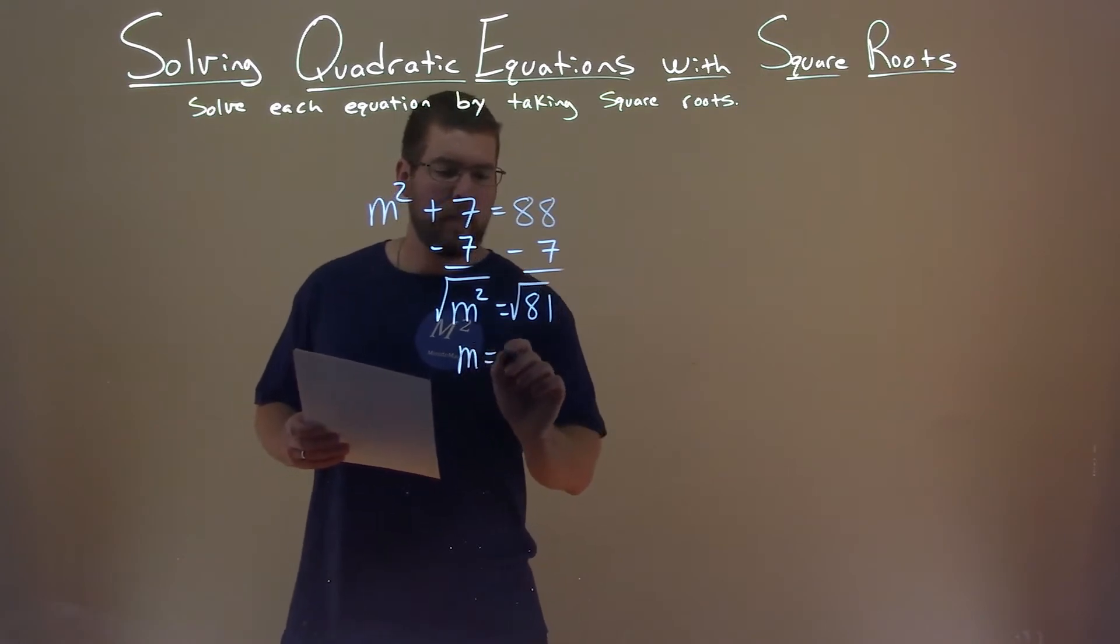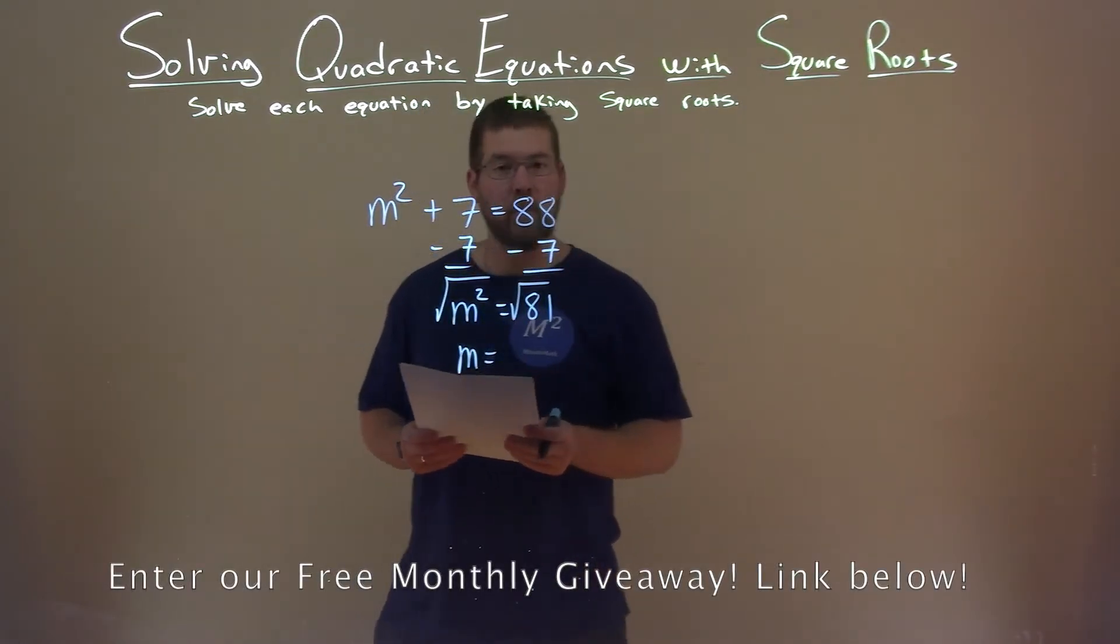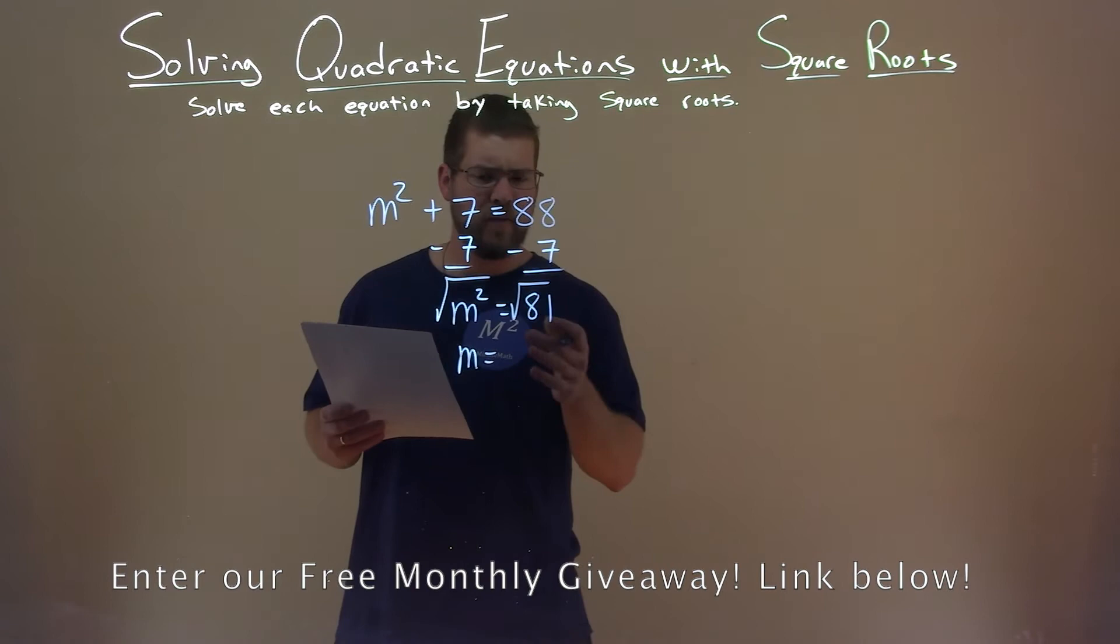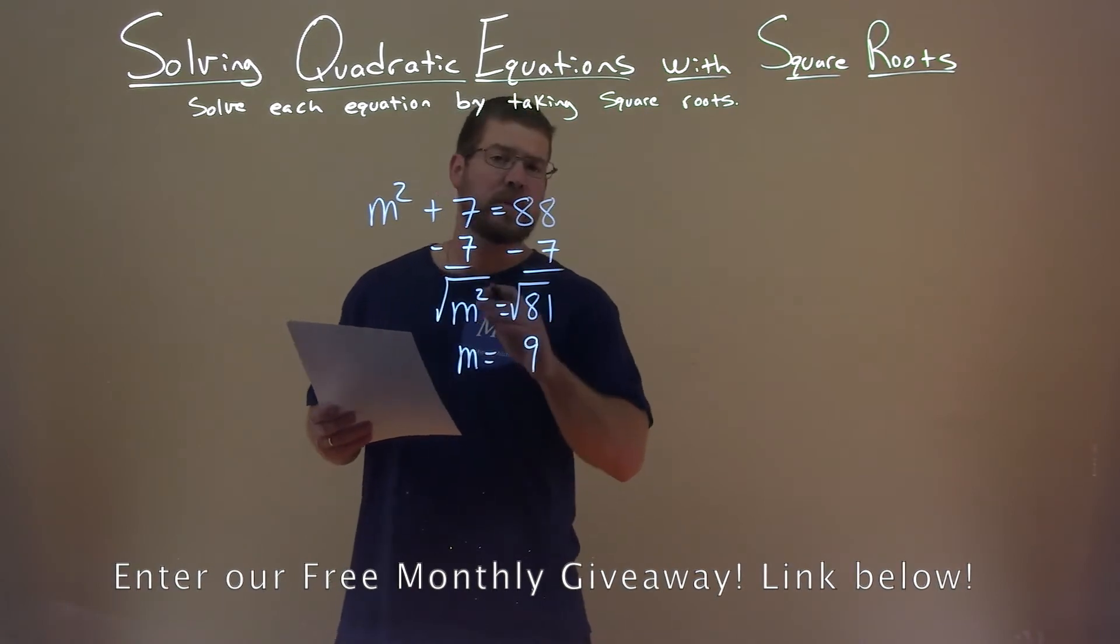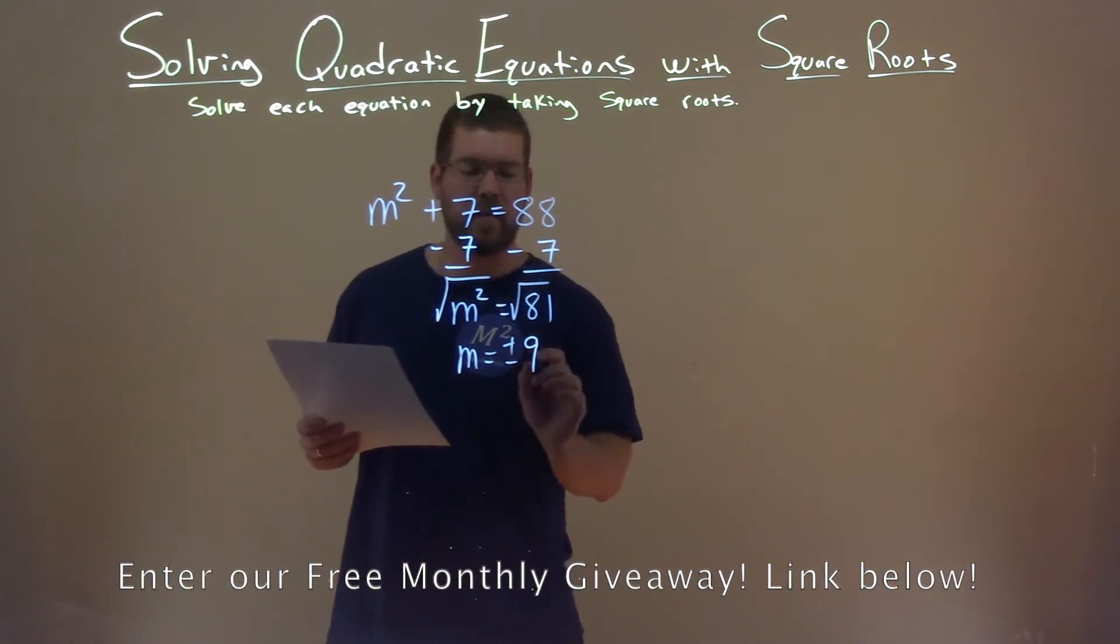So now we're left with m by itself equals the square root of 81. Well, square root of 81 is 9, and since we're taking the square root over the equal sign, that's plus and minus.